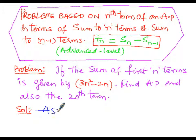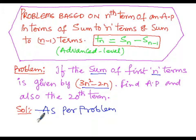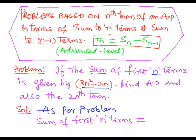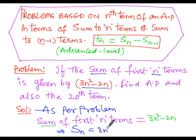As per the problem, the sum of first n terms S(n) is given by 3n² minus 2n. Now at n equals 1, we substitute n=1 into the formula.